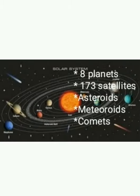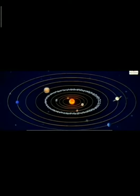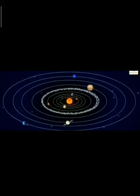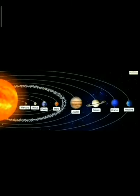The sun and its family is known as the solar system. In the solar system, it comprises of 8 planets, 173 satellites, thousands of asteroids, meteoroids and comets. The sun is at the center and 8 planets are revolving around the sun, or orbiting around the sun.